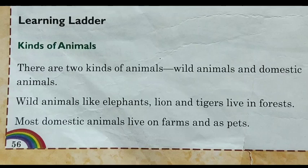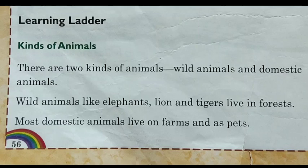Wild animals like elephant, lion, and tiger live in the forest. Animals that live in the forest, which we cannot keep at our home, are called wild animals — lion, tiger, crocodile, giraffe, they all are wild animals. Most domestic animals live on a farm or as a pet. Domestic animals are those animals which we can keep at our home, in our courtyard. Those animals are known as domestic animals.